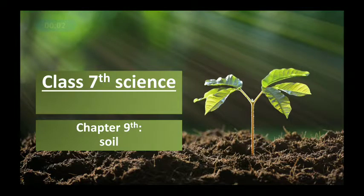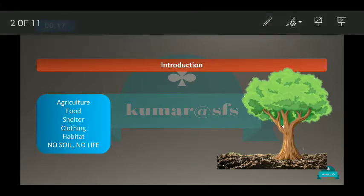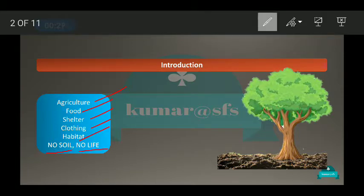Hi dear students, welcome to the science class for Class 7. Today we are going to learn the remaining part of Chapter 9, that is Soil. We have already learned that soil is very important in our daily life — it is important for agriculture, food, shelter, clothing, and habitat. So we can say that if there is no soil, there is no life.